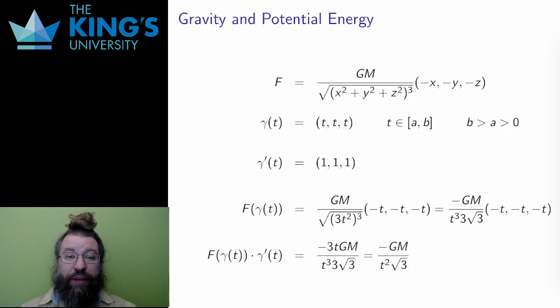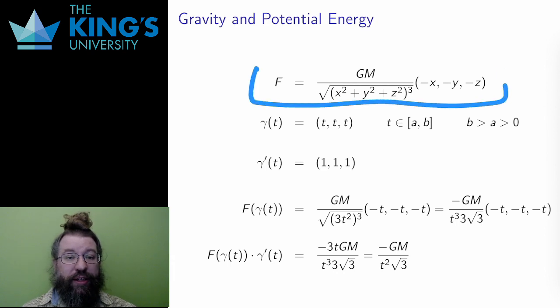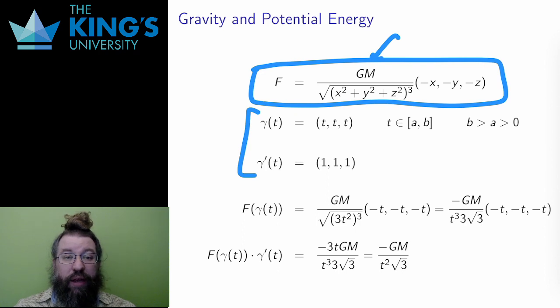An important example that I've already mentioned a few times is the force due to gravity. Here is that force per unit mass, for capital M a mass centered at the origin, and g the gravitational constant, of course. Let me consider a path γ(t) = (t,t,t). This is a path going directly away from the origin, starting at some (a,a,a) and ending at some (b,b,b), for some positive numbers a and b. The derivative of γ is (1,1,1).